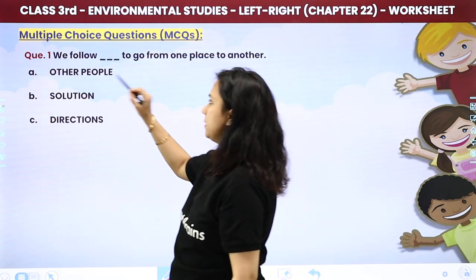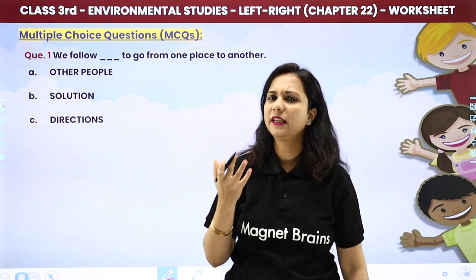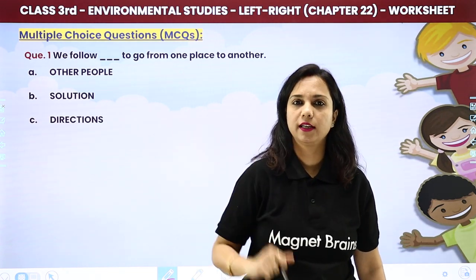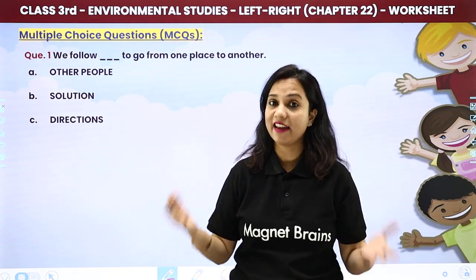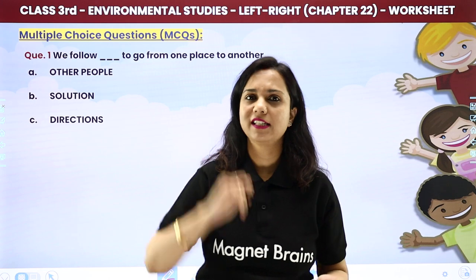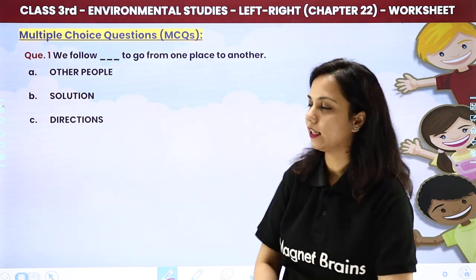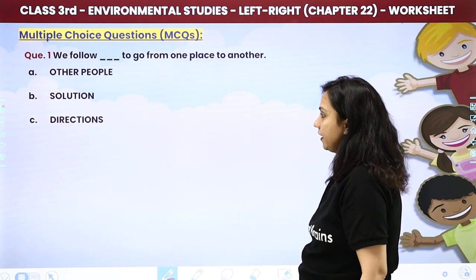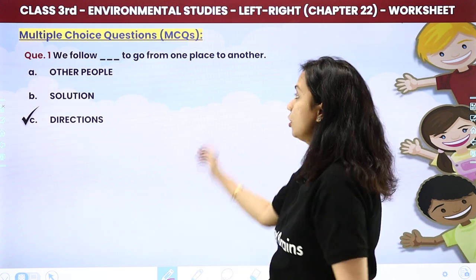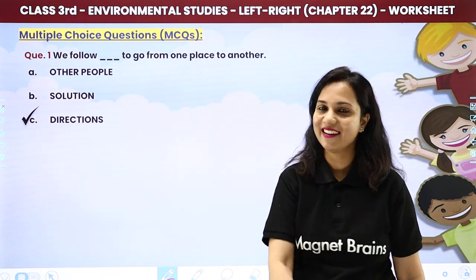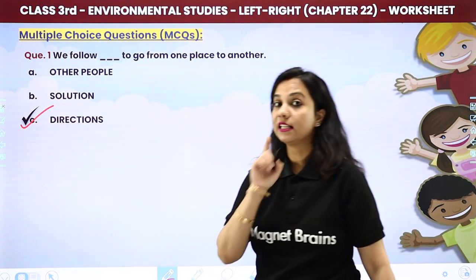Multiple choice questions. We follow dash to go from one place to another — do we follow people, solutions, or directions? The right answer is directions. We follow directions to go from one place to another.